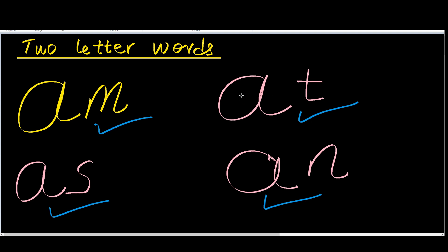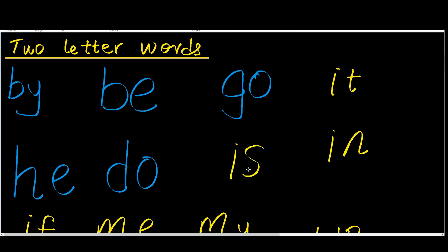A-T. Good. The next one: A-N. That's very good. What about B-Y? By. Again: By. Okay, what about B-E? Again: B-E. What about G-O? Go. Again: Go. What about I-T? It. Again: It. What about H-E? He. Again: He. What about D-O? Do. Again: Do. What about I-S? Is. Again: Is. What about I-N? Again. Okay.